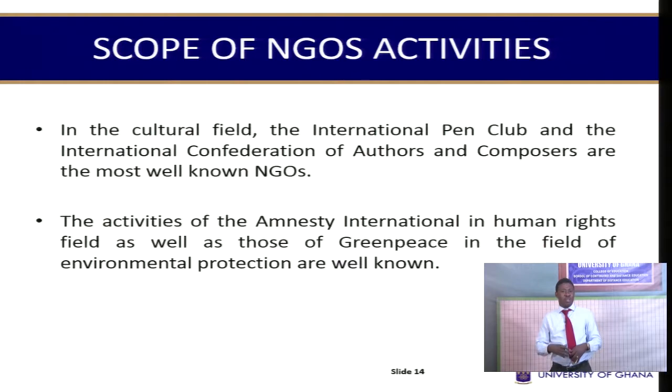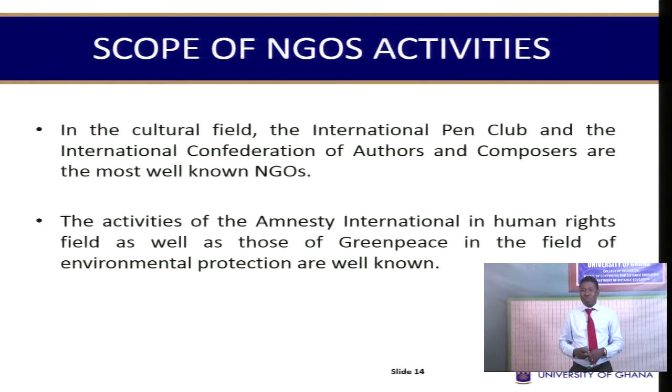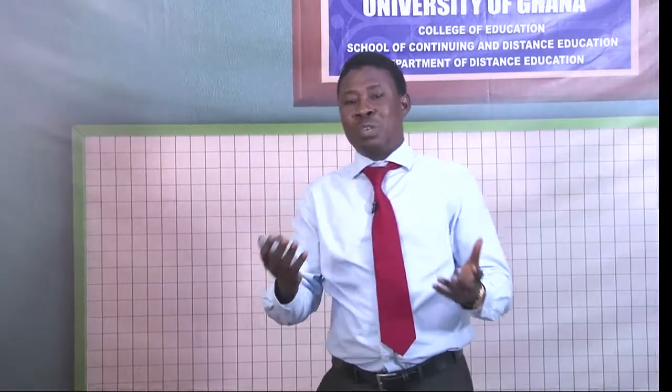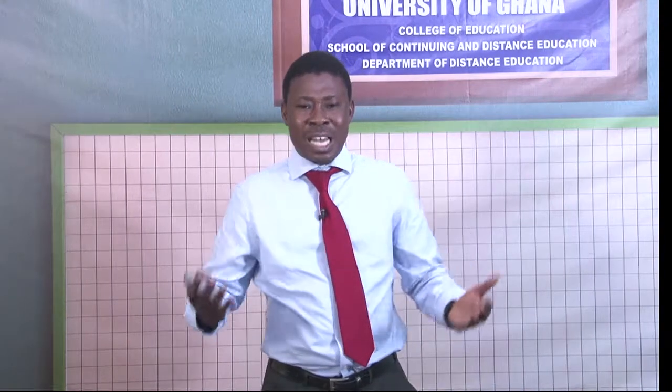There are NGOs focused on the environment, like Greenpeace, fighting oil drilling companies that pollute — for example, in the Ogoni area of Nigeria where there is heavy pollution from oil activities. In governance, Ghana has IDEC (Institute for Democratic Governance) and CDD (Centre for Democratic Development), which help develop democracy. The scope of NGO activities spans across everything. If you intend to establish your own NGO, you can focus on anything that affects humanity and specialize in that area.